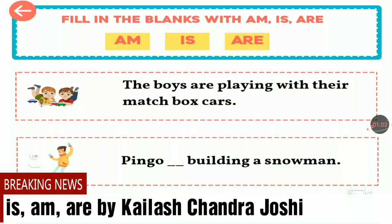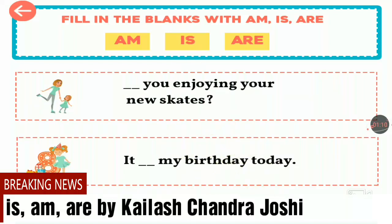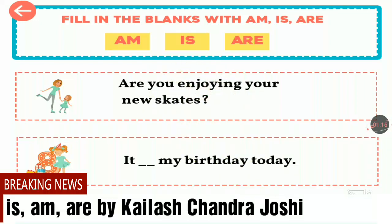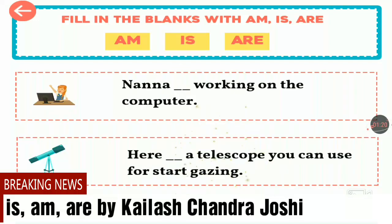Bingo is building a snowman. Bingo is a singular person, so 'is' is right. Are you enjoying your new skirts? Nana is working on the computer — Nana is a singular person, so 'is' is correct.